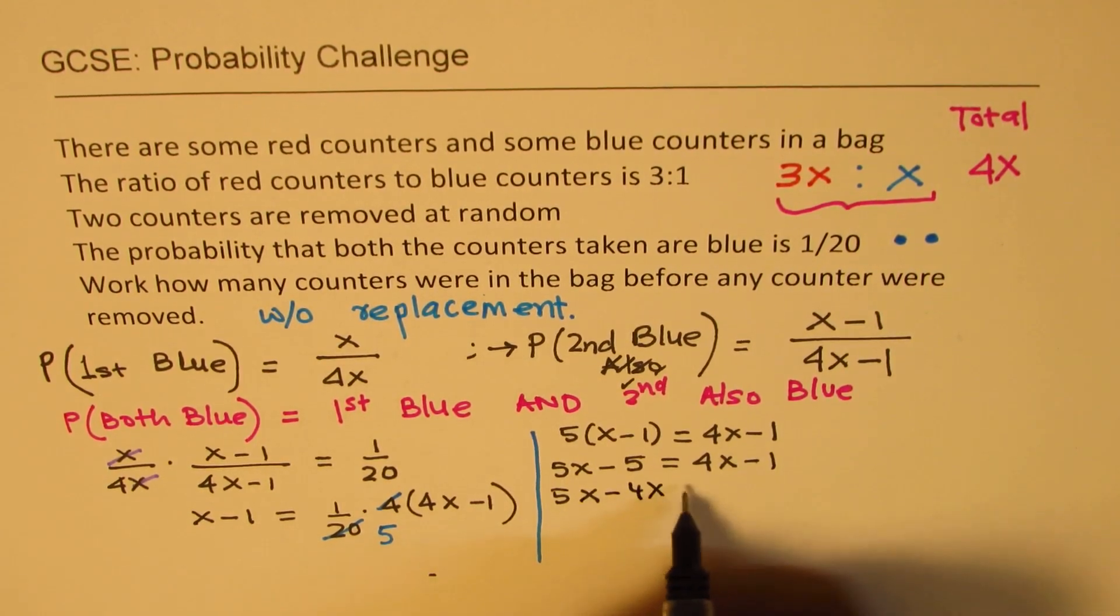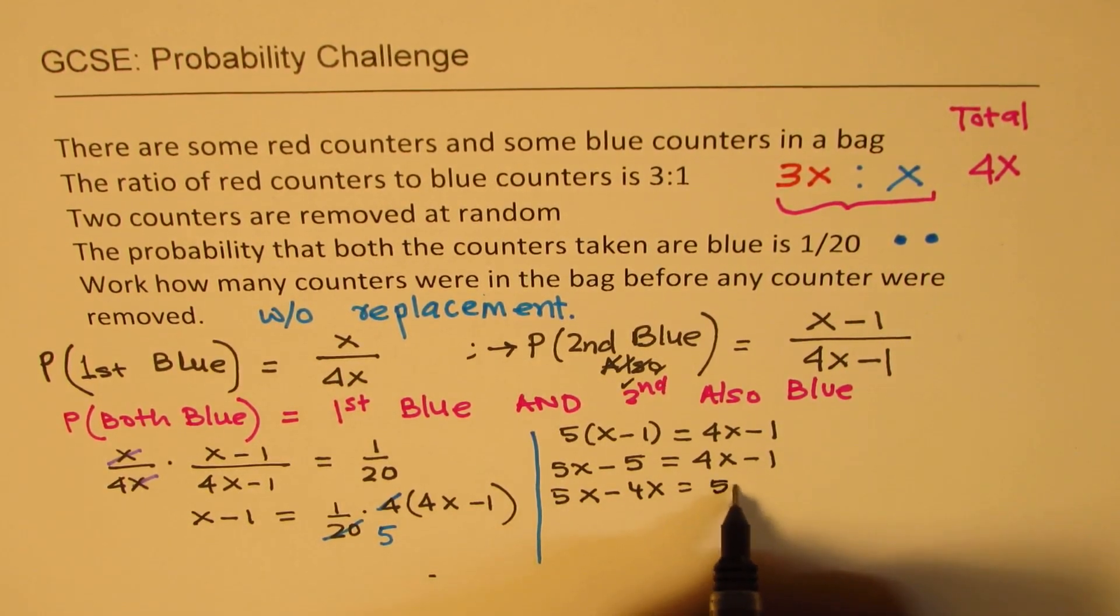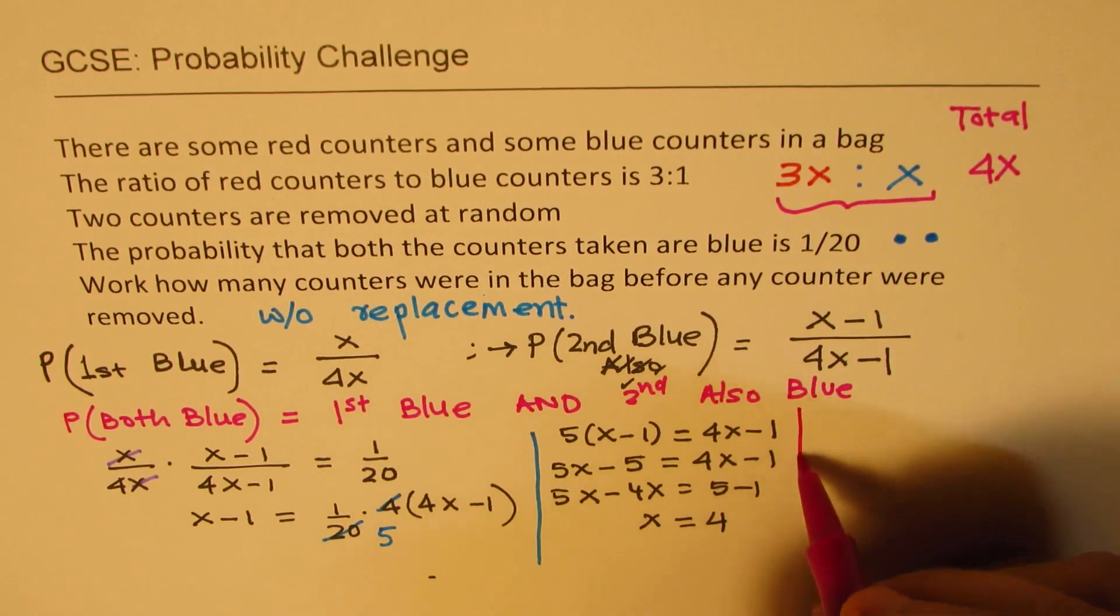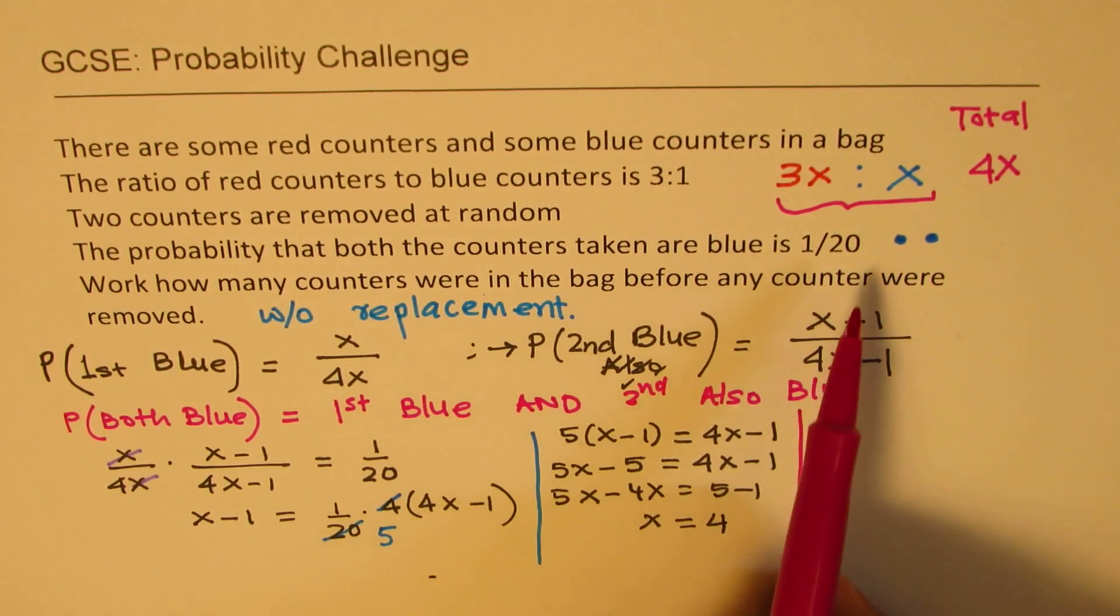So now we get 5x minus 5 equals to 4x minus 1. Let's bring the variables together. So we get 5 on the other side. So clearly, x is equals to 5 minus 1, which is 4.